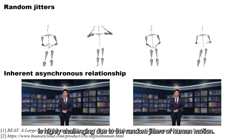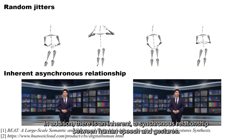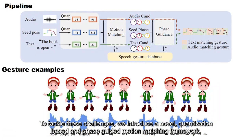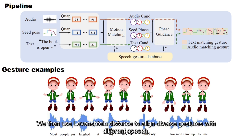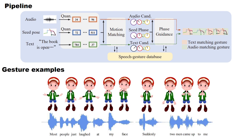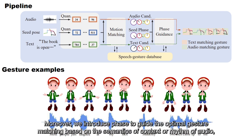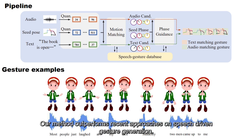Speech-driven gesture generation is highly challenging due to the random jitters of human motion, and there is an inherent asynchronous relationship between human speech and gestures. To tackle these challenges, we introduce a novel quantization-based and phase-guided motion matching framework. Specifically, we first present a gesture VQVAE module to learn a codebook to summarize meaningful gesture units. We then use Levenshtein distance to align diverse gestures with different speech, which helps match more appropriate gestures with speech. Moreover, we introduce phase to guide the optimal gesture matching based on the semantics of context or rhythm of audio, which makes the generated gestures more natural. Our method outperforms recent approaches on speech-driven gesture generation.